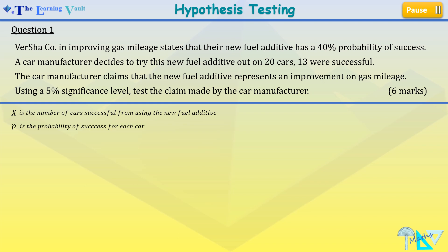Now we present the model of our test statistics and we write our hypothesis test. The null hypothesis states that p equals 0.4, and our alternative hypothesis states that p is greater than 0.4.